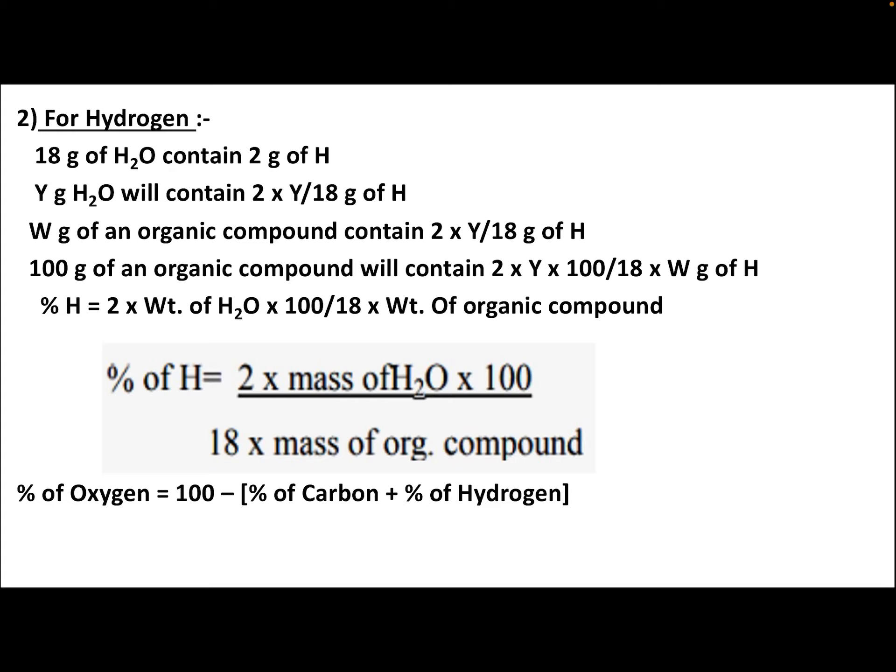If oxygen is also present in the organic compound, the percentage of oxygen is calculated as: % O = 100 − (% C + % H).